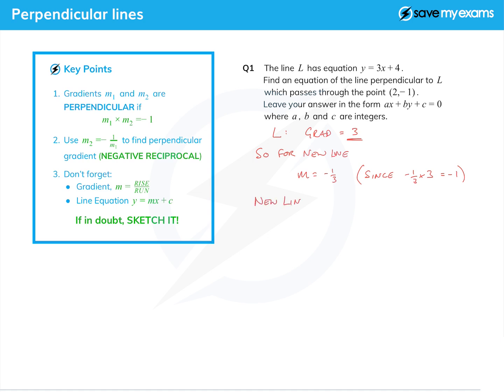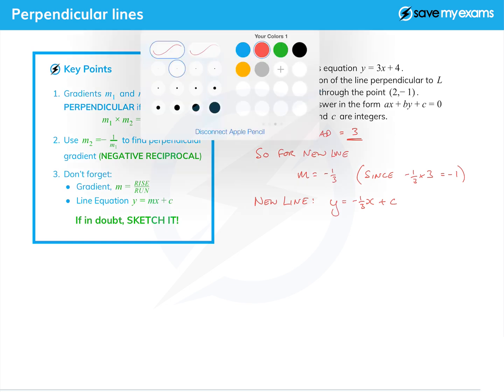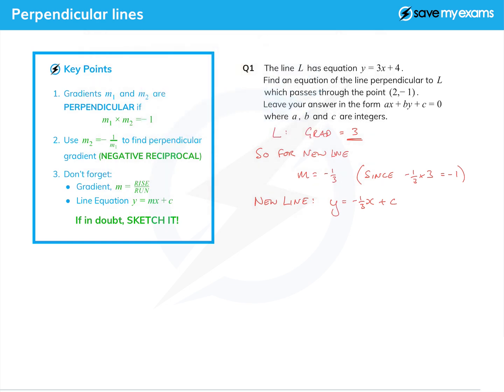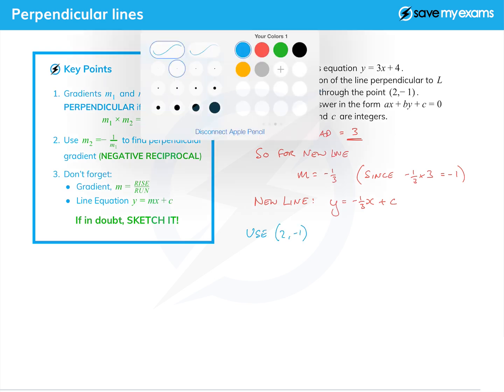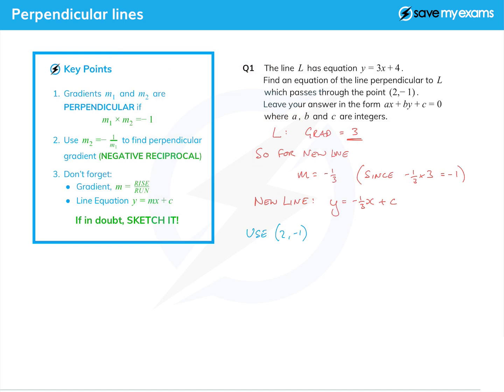So the equation of the new line is y equals minus a third x plus c. We do need to find the plus c. In order to do that we're going to use the point we're given.